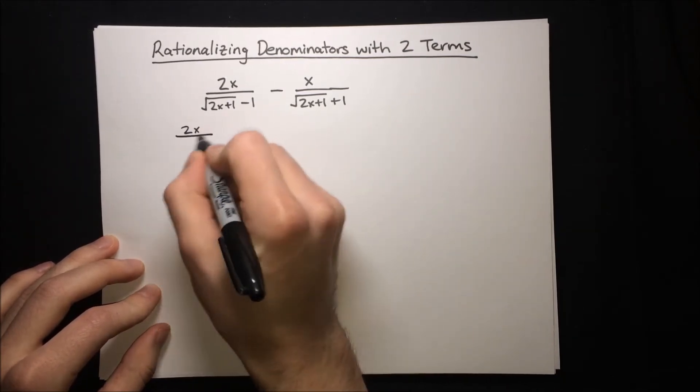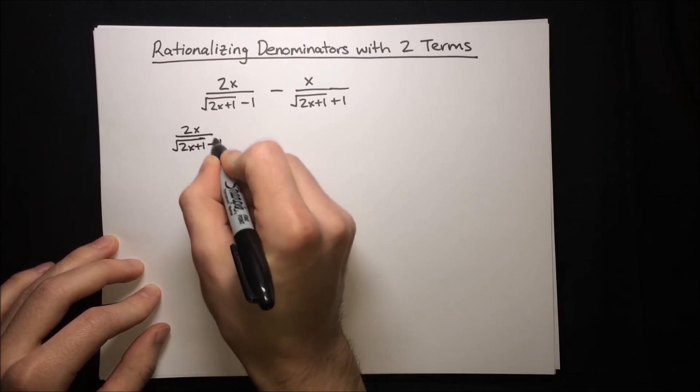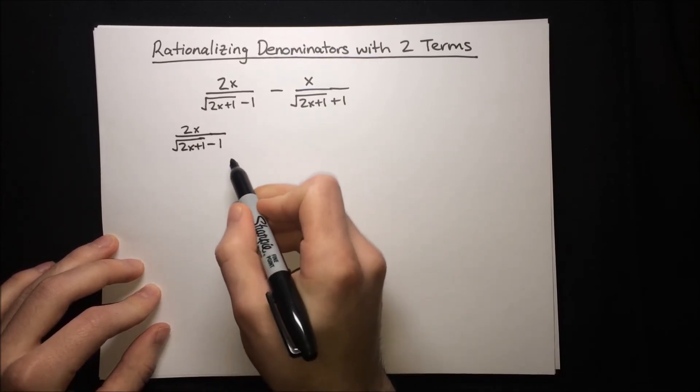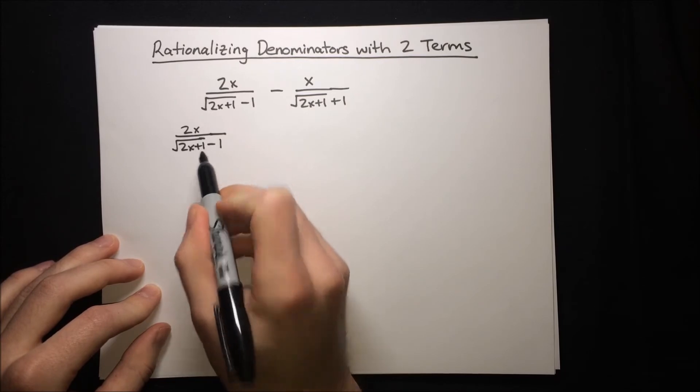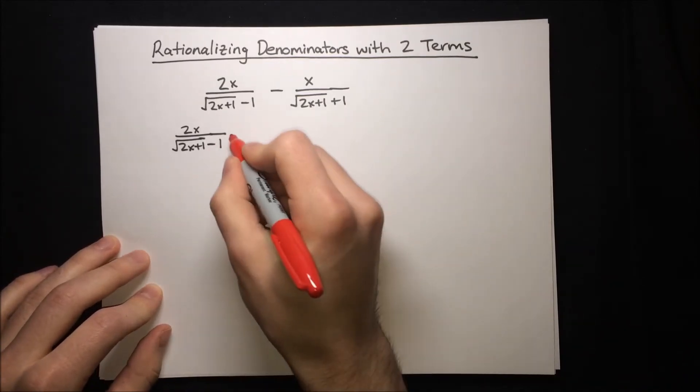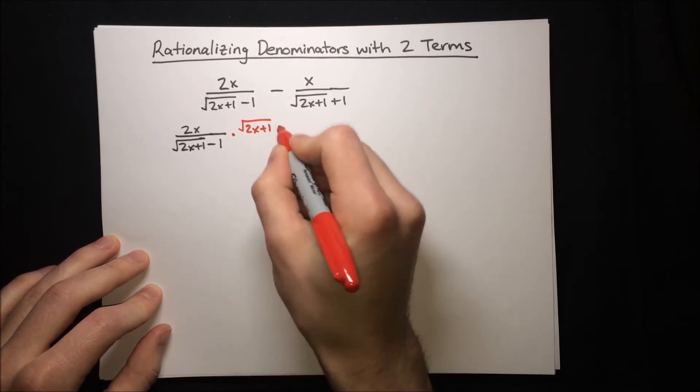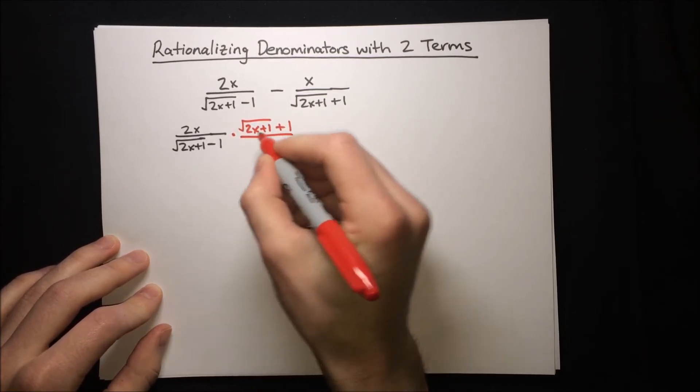So that's 2x over root 2x plus 1 minus 1, and we're going to multiply by the conjugate of this denominator, so we'll just flip that negative sign to a positive sign and multiply by root 2x plus 1 plus 1 on the top and the bottom.